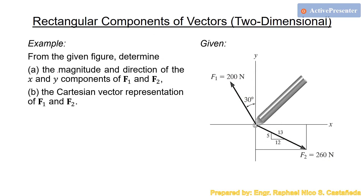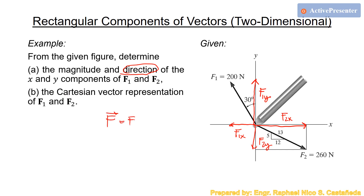For Part A, determine the magnitude and direction of the x and y components of F1 and F2. For F1, the y-component is directed upward and the x-component is directed to the left. For F2, the x-component goes to the right and the y-component goes downward. For Part B, determine the Cartesian vector representation of F1 and F2, using the form F = Fx·i + Fy·j.